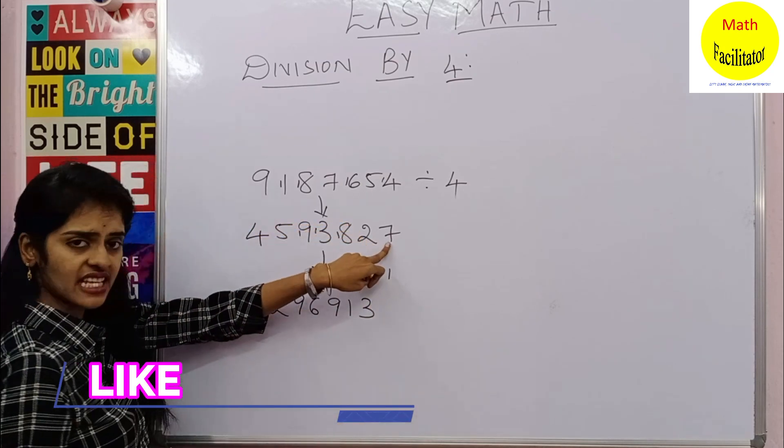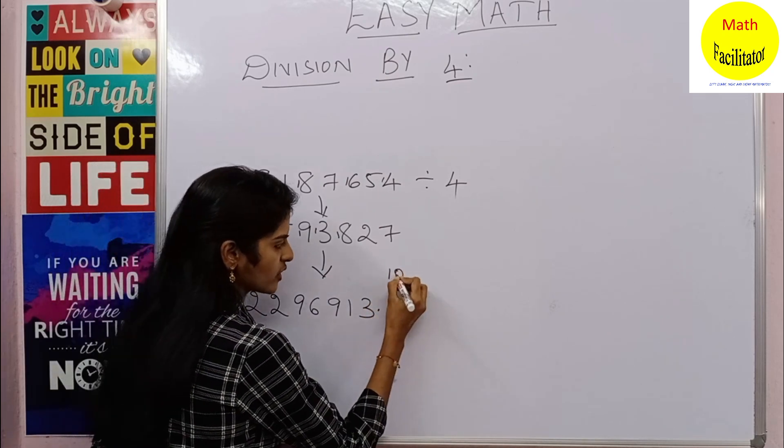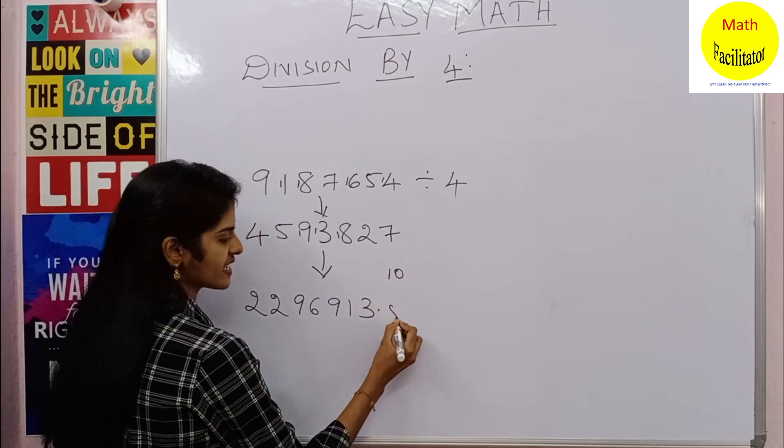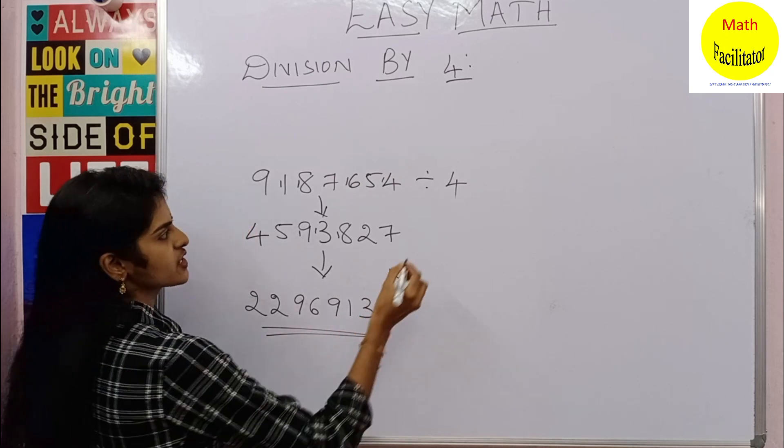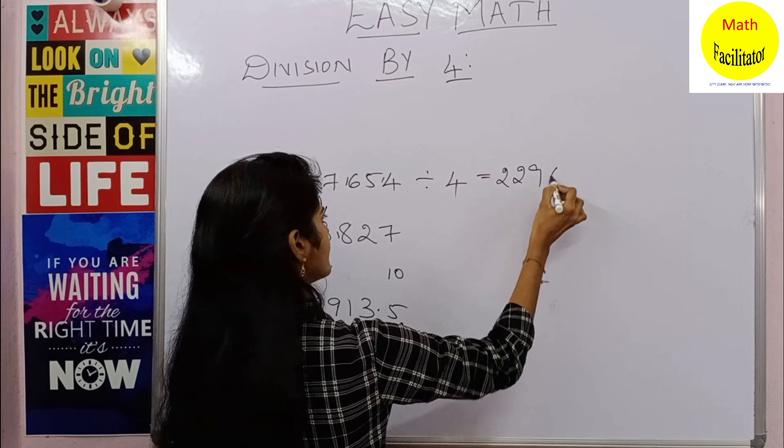And now one is reminder since you have seven. So now you put a decimal point and you can write a zero here. Now two fives are ten. So this is the answer. So the answer is 229691 3.5.